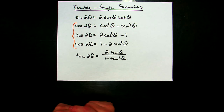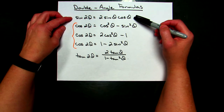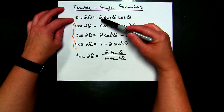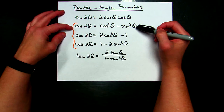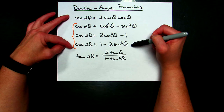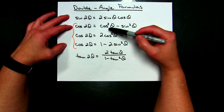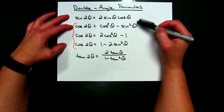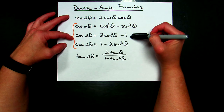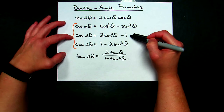Today we're going to take a look at some double angle formulas — formulas used in a trig course. We have one double angle formula for sine of 2θ, and that's 2 sine θ cosine θ. There are three different options you can choose from if you need the cosine of 2θ. Any three of these will give you the same answer, and you're probably going to pick the formula based on what you have.